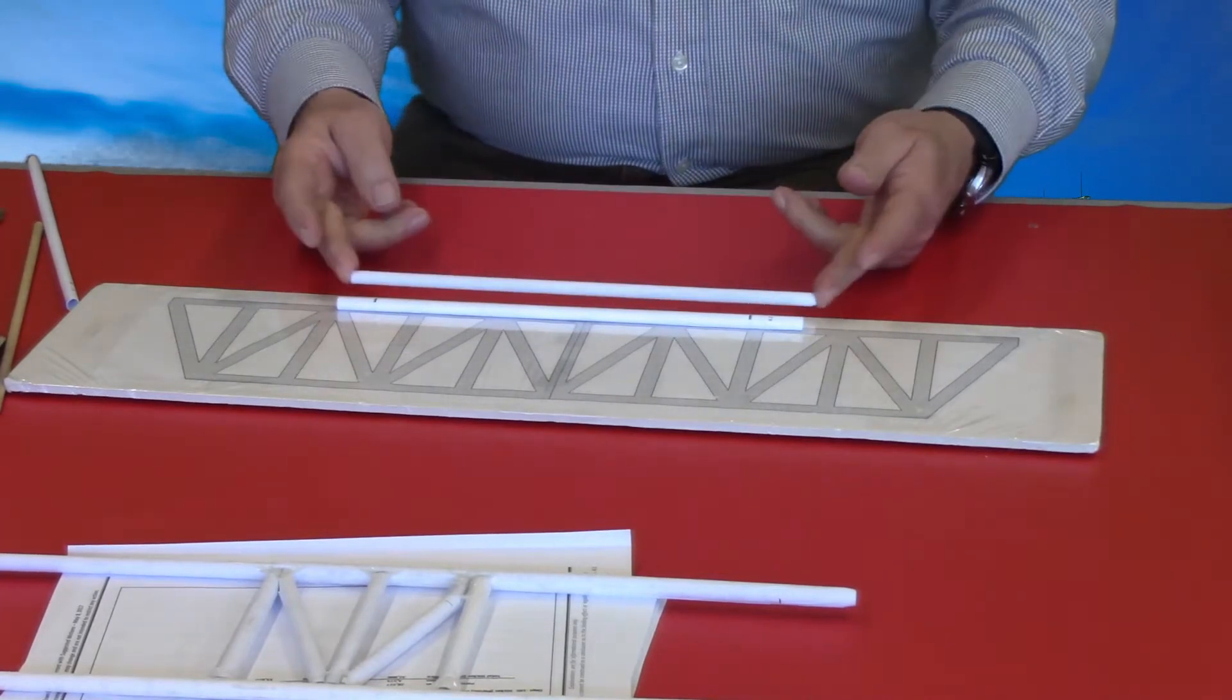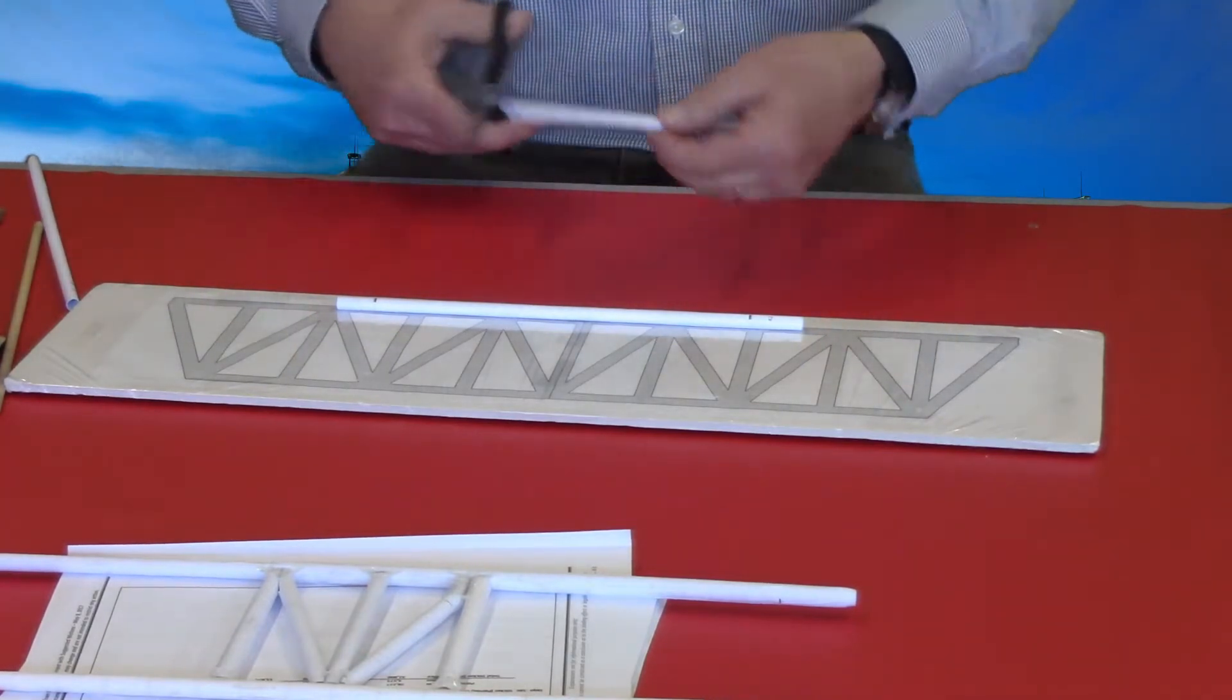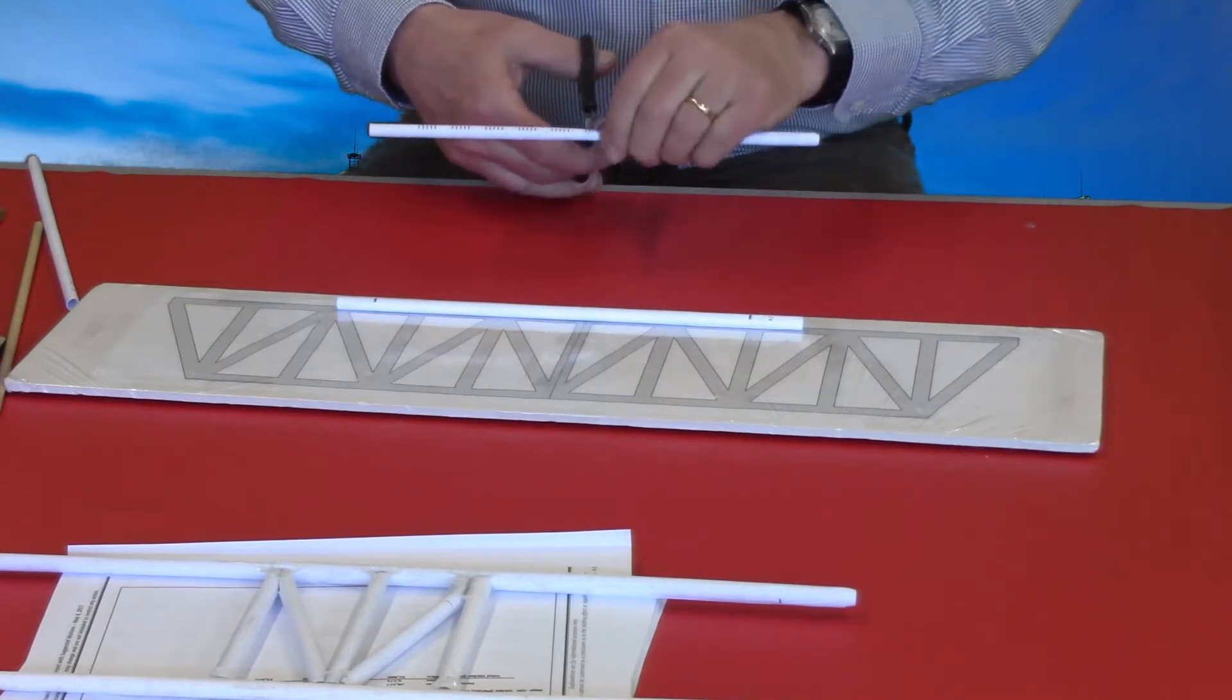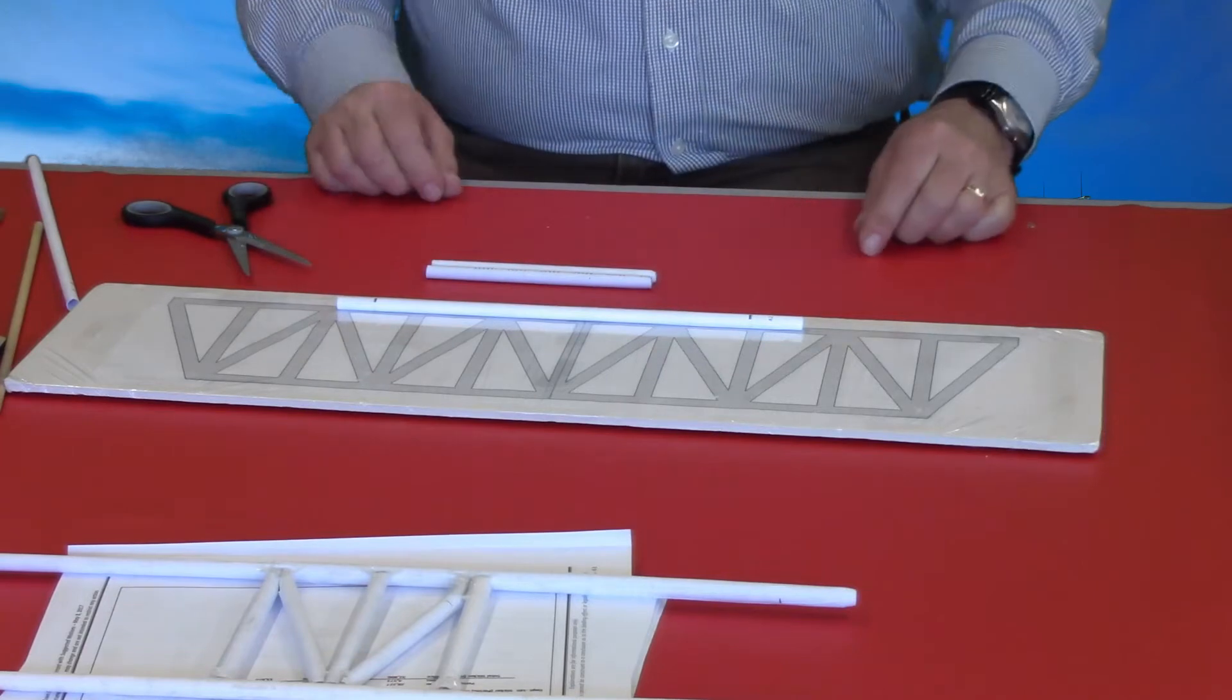Take the second tube and cut it approximately in half. It doesn't have to be exact, if you want to make it exact you can measure, but about in half is good.